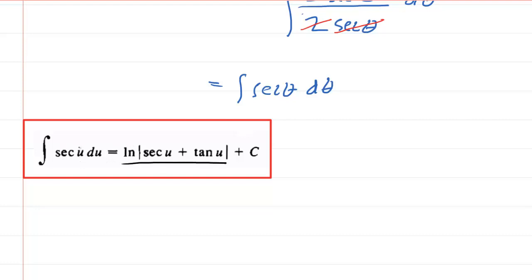The same would apply if our variable was theta. So we're going to follow this expression and we're going to see that the integral of sec theta is the natural log of the absolute value of the secant of theta plus the tangent of theta and then plus C as our constant of integration.